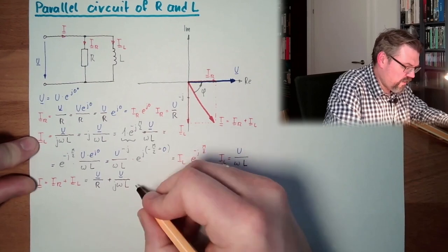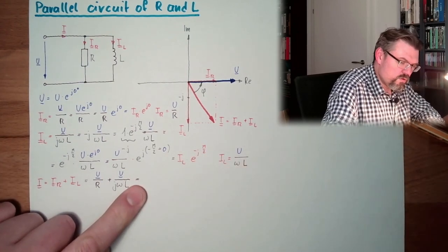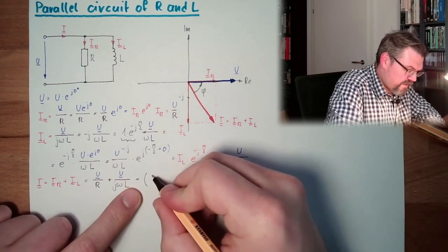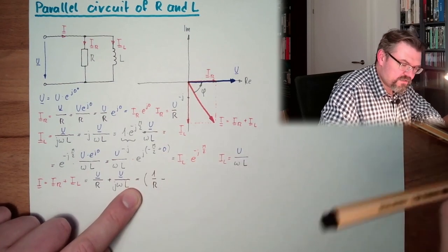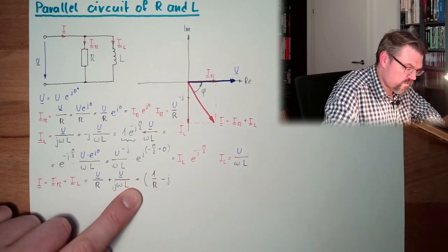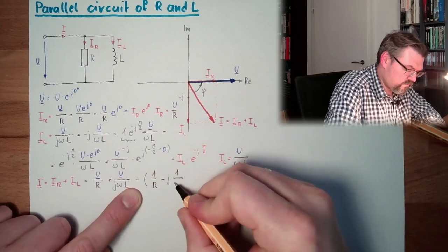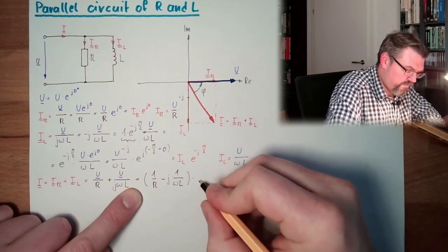Plus U divided by j omega L, this is IL. So we are ending up, I factor out U, so what is the rest? 1 divided by R, and now minus j, 1 divided by omega L, and here we have U.